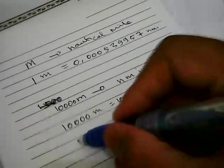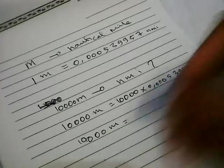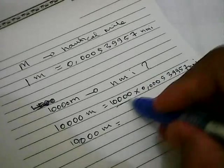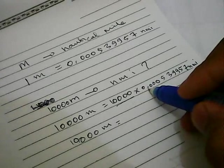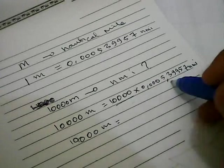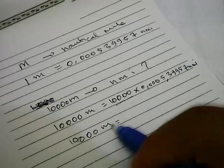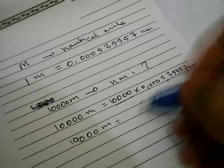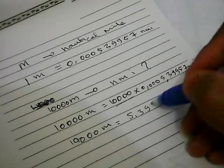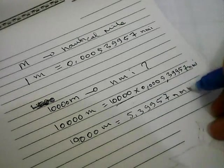Now, 10,000 meters is equal to, well, we have 4. So this comma I just need to put in here because you've got 4 zeros over here. So the result is 10,000 meters is equal to 5.39957 nautical miles.